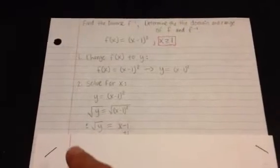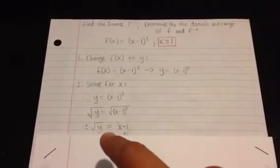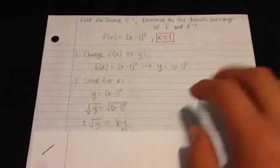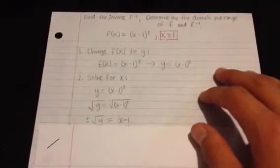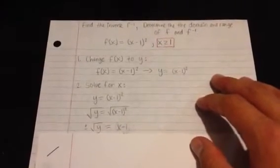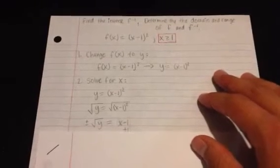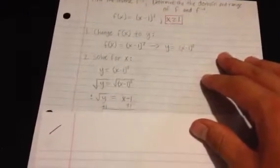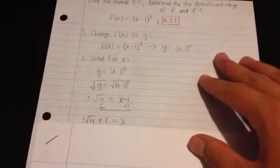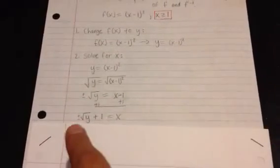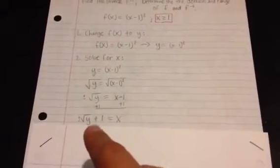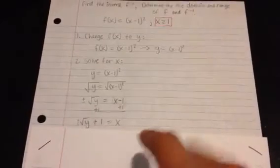And you're left with plus or minus the square root of y, for now at least, is equal to x minus 1. The next step is to isolate the x by adding 1 to both sides. And you're left with plus or minus square root of y plus 1 is equal to x.